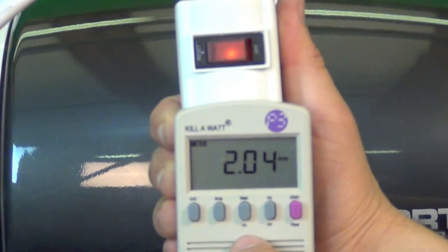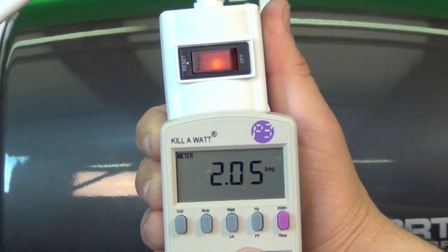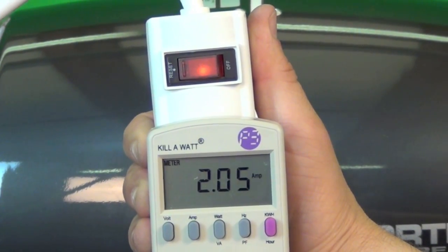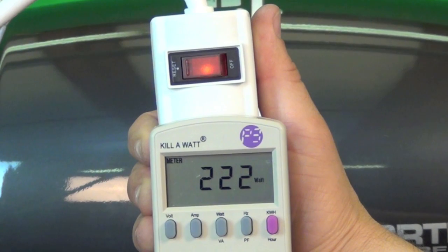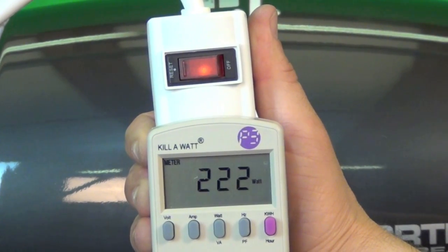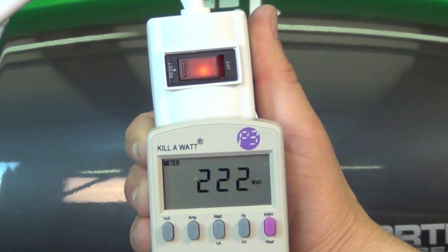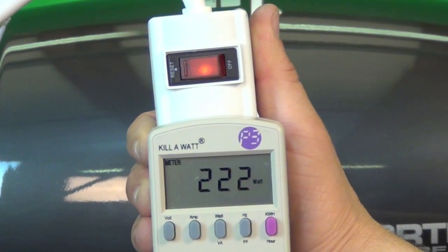So here's our standard inline fan. As we can see, it's running about 2 amps. This is an 8 inch fan with a 740 CFM capability. It's drawn about 220 watts on the 120 volt. So this standard inline fan is running about 122 watts at about 740 CFM.